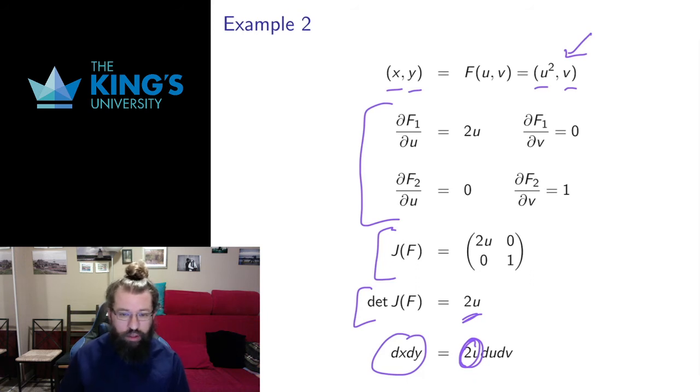So if I'm at a level where u equals 3, I'm going to have areas that are 6 times as large. If I'm at a level where u equals 4, I'm going to have areas that are 8 times as large. If u is negative, I'm going to have some flip in orientation of the areas. So this is another thing that can happen.